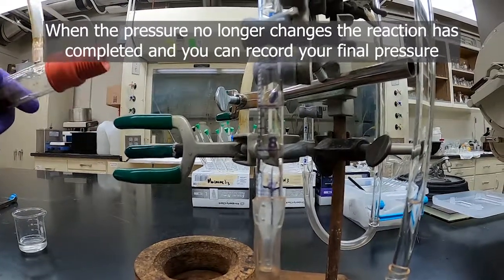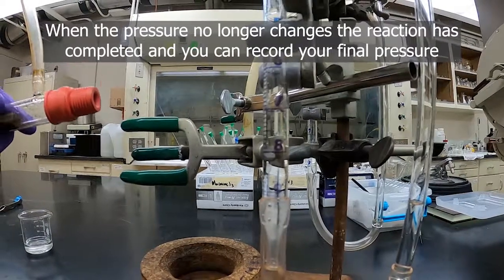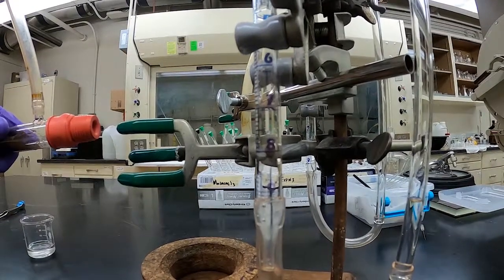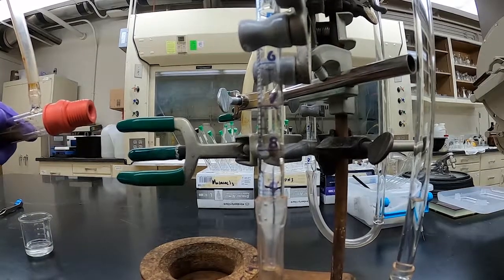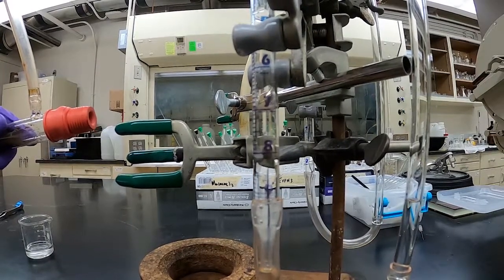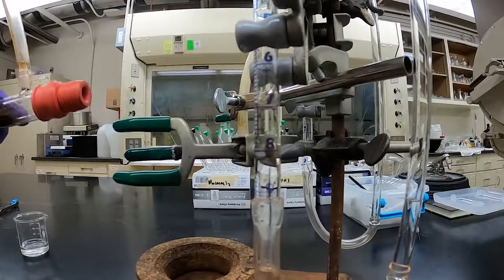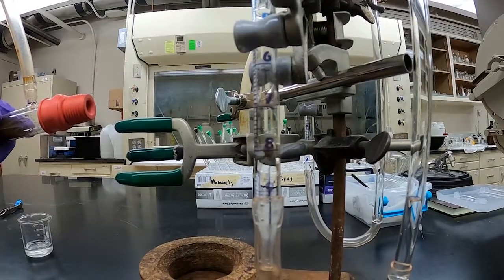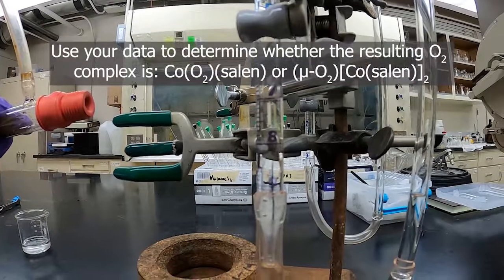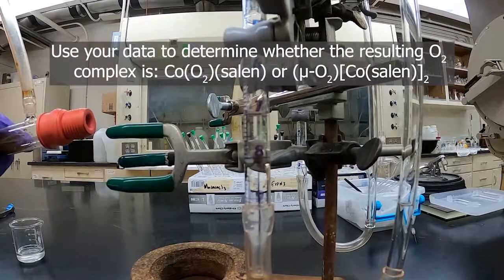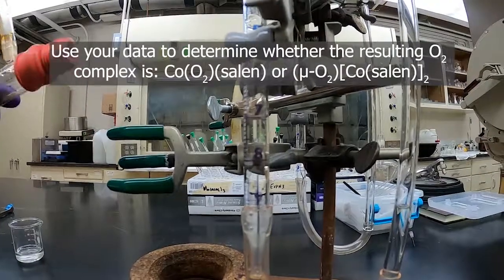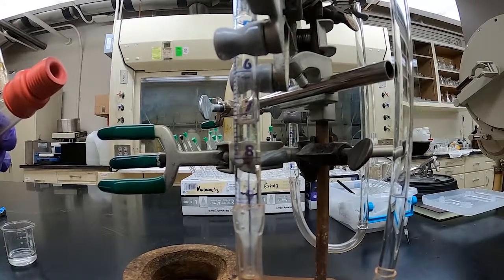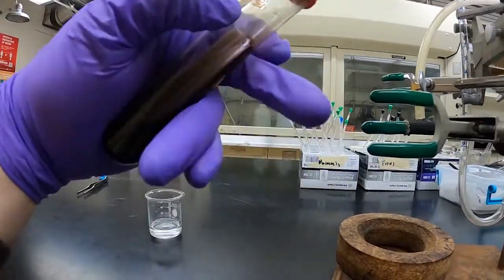So in your experiment, you'll want to shake this and let this sit here until you no longer observe any change. And then you'll use the volume of oxygen that was absorbed to determine some things about the cobalt complex that we've made and how it binds oxygen. And that is the cobalt saline O2 uptake.